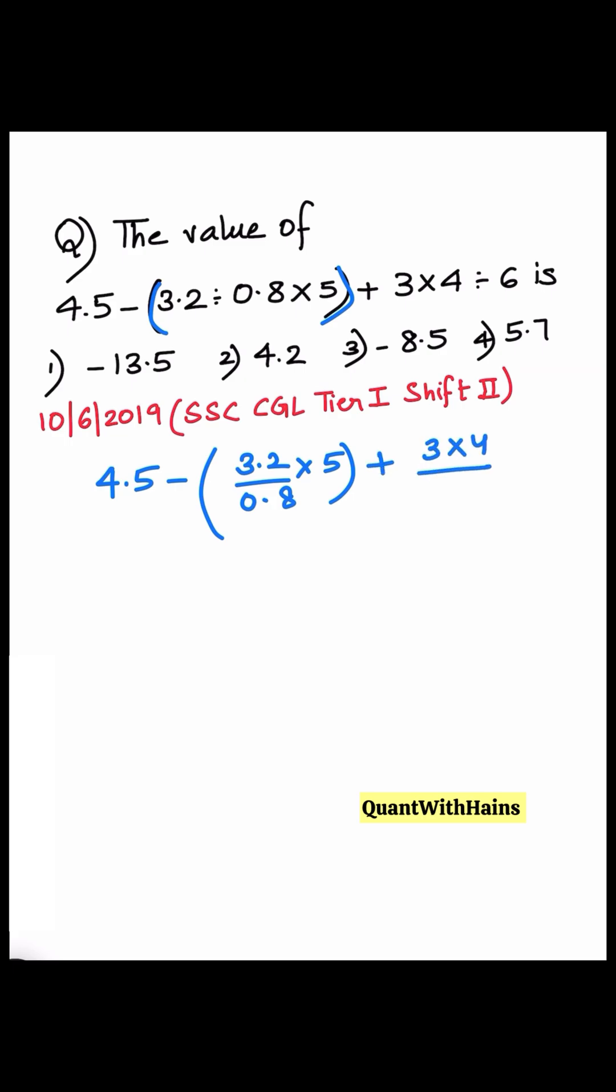Divided by 6. So 4.5 minus, decimals cancel. 8 times 4... 4 times 5 is 20, plus...